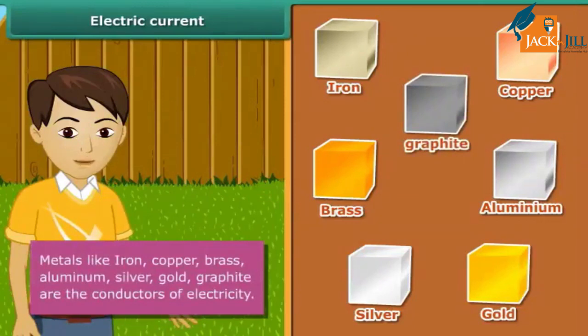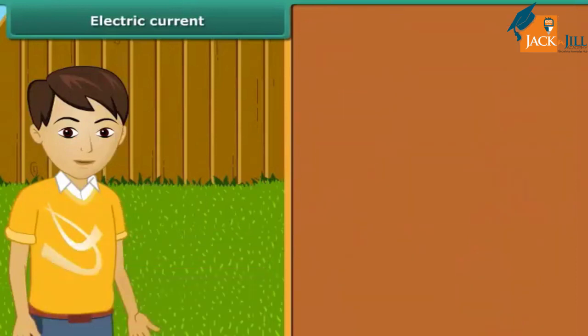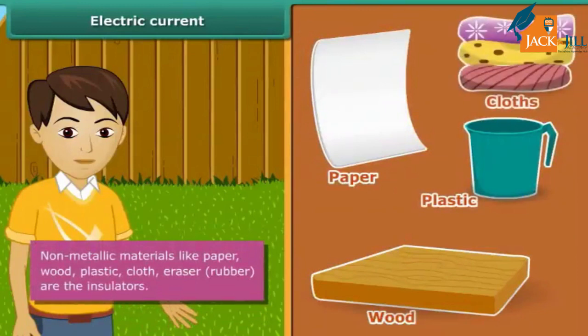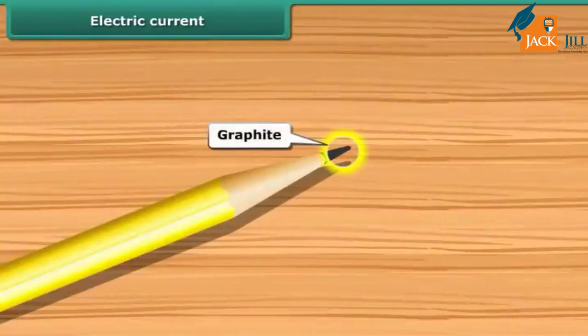The materials through which electric current doesn't flow are called insulators. Insulators are also known as non-conductors of electricity. Paper, wood, plastic, cloth, eraser, rubber are insulators. Pencil lead is made of graphite.